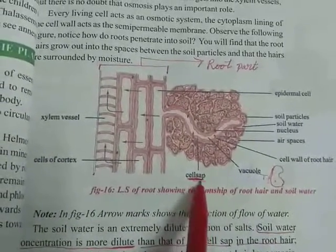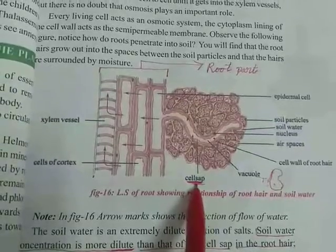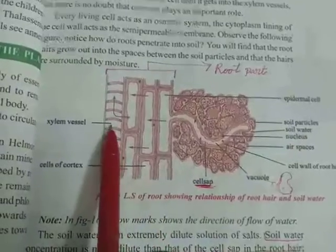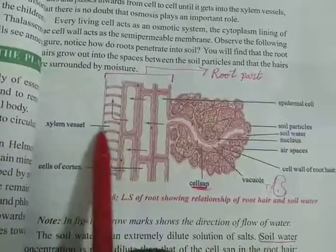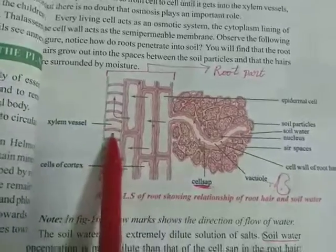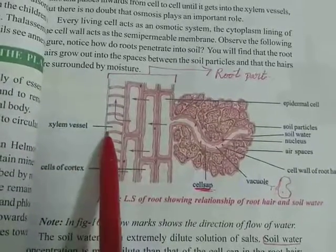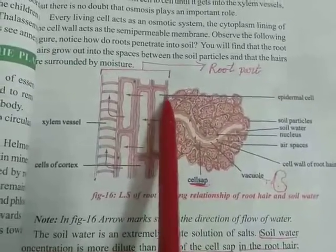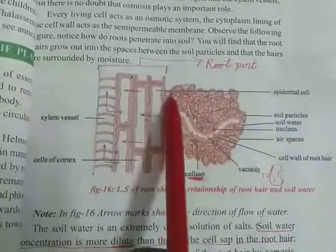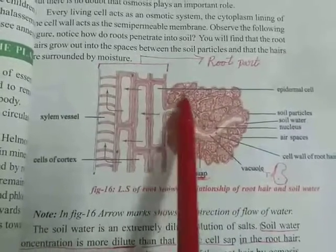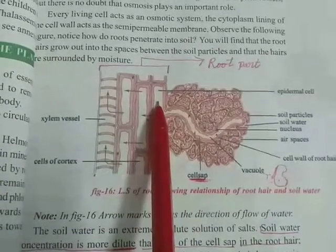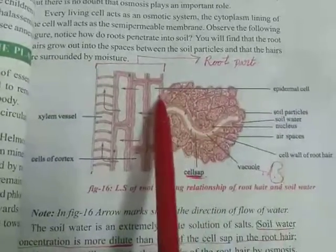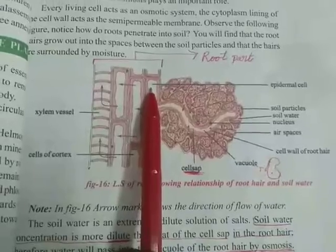In this root hair there is a chance to see cell sap, which is one type of plant juice. The cortex cells are also visible. Xylem vessels are useful for transportation of water — they carry water and minerals. There are also epidermal cells, and mesodermal and endodermal tissues in the root.